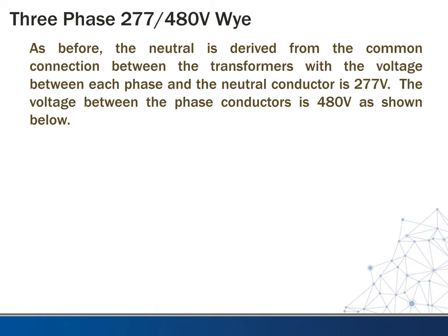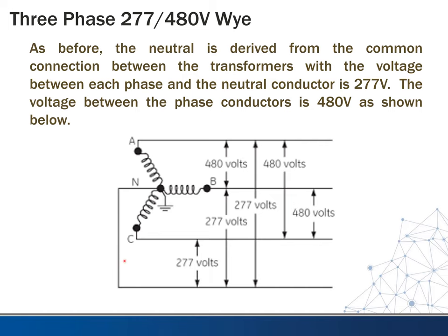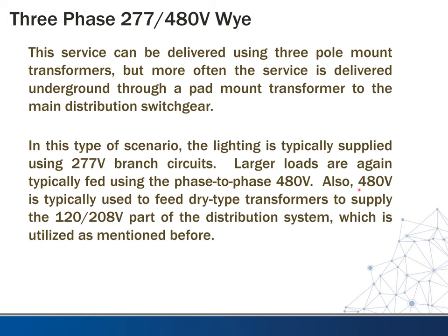The neutral is derived from a common connection between the transformers, just with different winding counts giving different output voltage. Measuring between each phase and the neutral gives 277 volts. Lighting can be done at 277 volts — that's not uncommon. Between the phases, we measure 480 volts, which is reserved for larger loads. This service can also be delivered using three pole-mounted transformers, but more often it's delivered underground through a pad-mounted transformer to the main distribution switchgear. Lighting is typically supplied with 277-volt branch circuits, larger loads use phase-to-phase 480 volts, and 480 volts also typically feeds dry-type transformers that step down to 120/208.